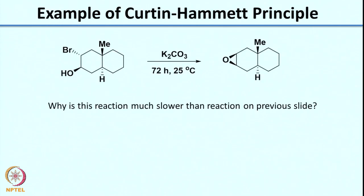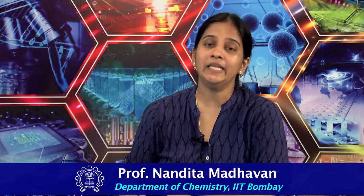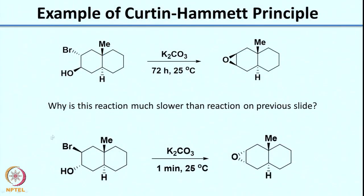Now I want to leave you with a question. Here is another molecule where the only difference is Br coming down instead of up, and OH coming up. When treated in the presence of a base, the time taken is 72 hours at room temperature. For the previous molecule it took only 1 minute to form the epoxide, whereas for this molecule it takes 72 hours. So why is this reaction much slower? Think about this question - in the next lecture we will look at the explanation for this particular problem.